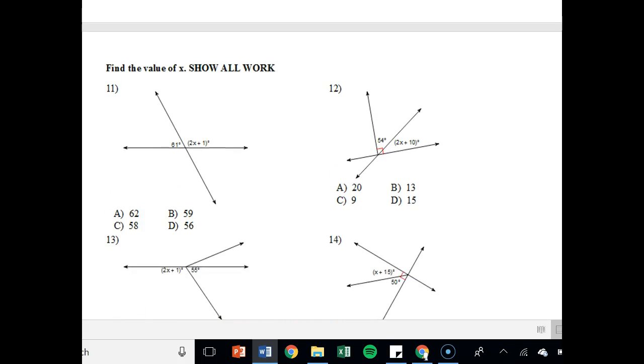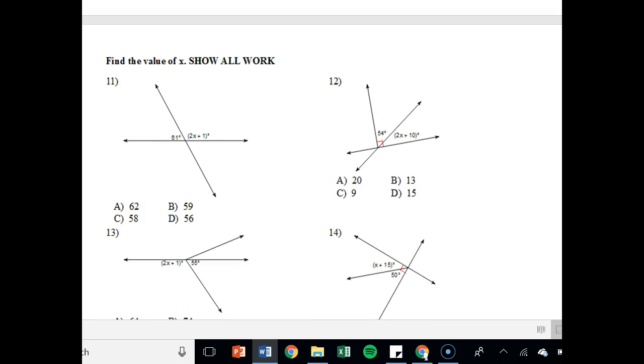On the back side, we're going to find the value of x. So we're going to first label it. So for instance, number 11, I see that straight line there. So that is complementary. Because it's complementary, I'll say 61 plus 2x plus 1 equals what's, sorry, I messed up. It's not complementary. That's supplementary, my fault. It's a big difference. Equals 180.